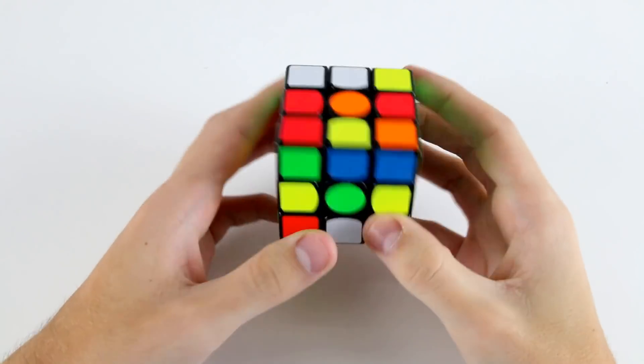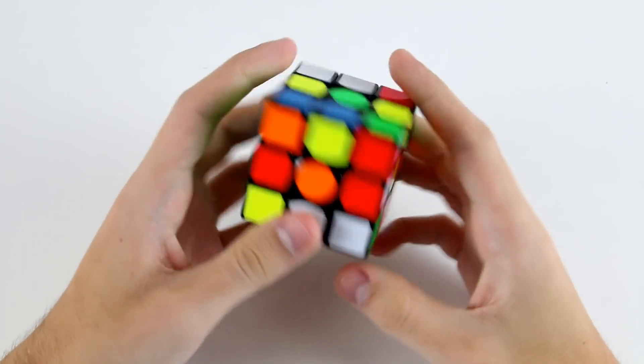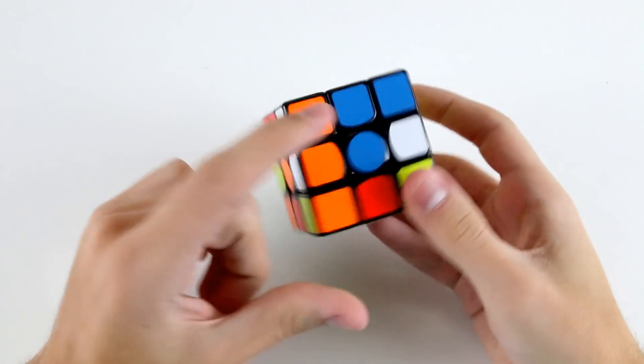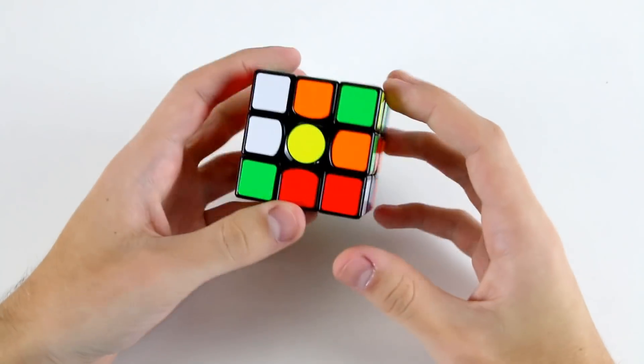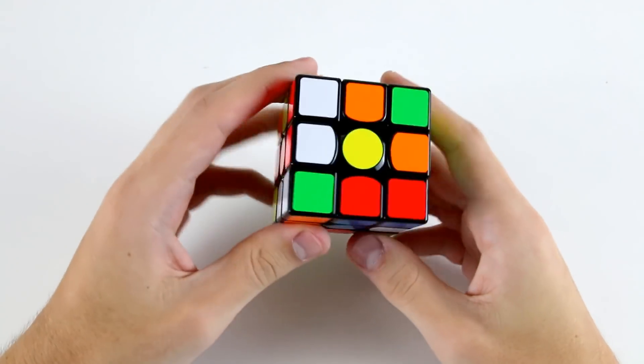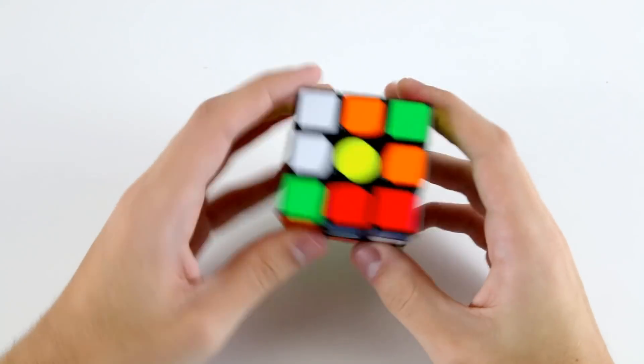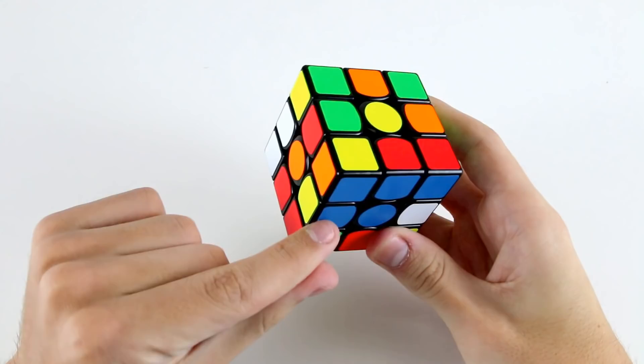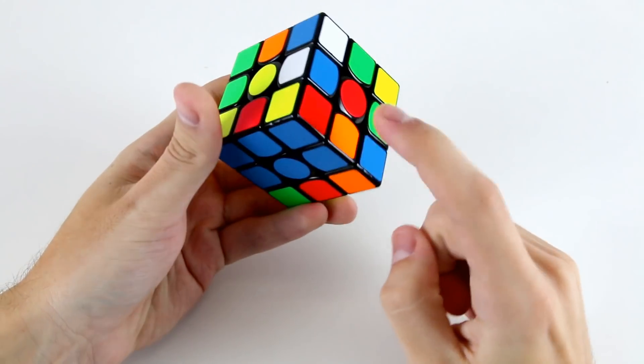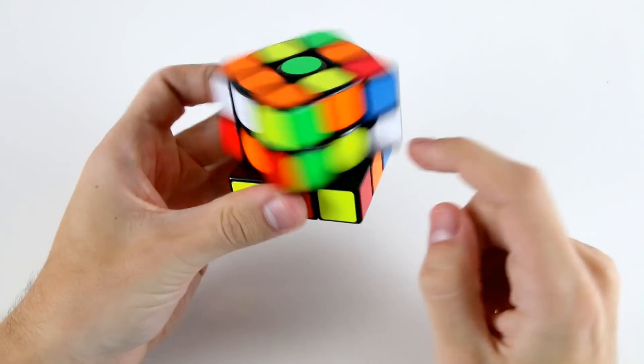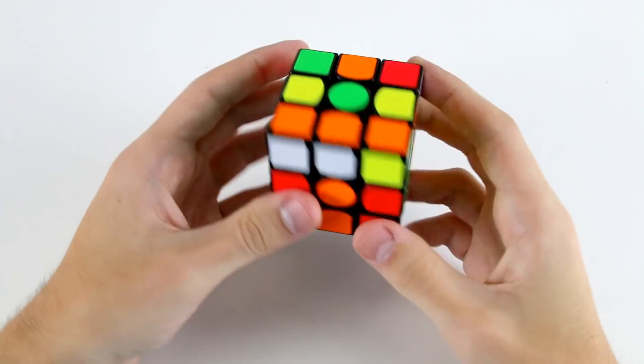Alright, the crosses on this scramble are all kind of trash. The only one with an edge oriented is the blue cross, but that's not a particularly great solution to be perfectly honest. We might end up just having to do it. We can do something like l2 to solve that one and then we can go r to insert this one, but this one isn't correct. Then we can go y u' r d' r' r' d' just like that.